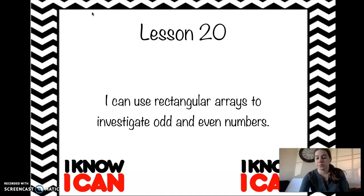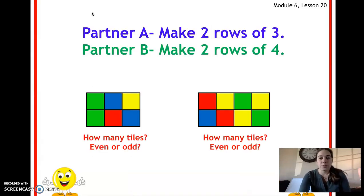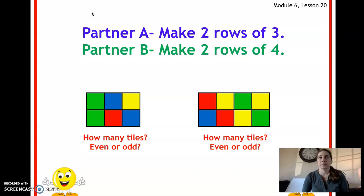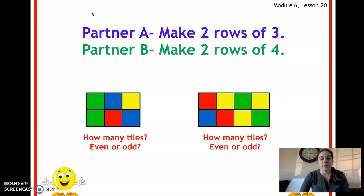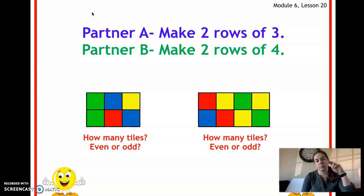Our first question says: Partner A, you're gonna make two rows of three, and Partner B, you're gonna make two rows of four. If you don't have a partner, that's okay — you can do both on your own. Looking at Partner A's work on the left, if we count the two rows of three we get six tiles. Is six even or odd? Even, because you can pair each one up together.